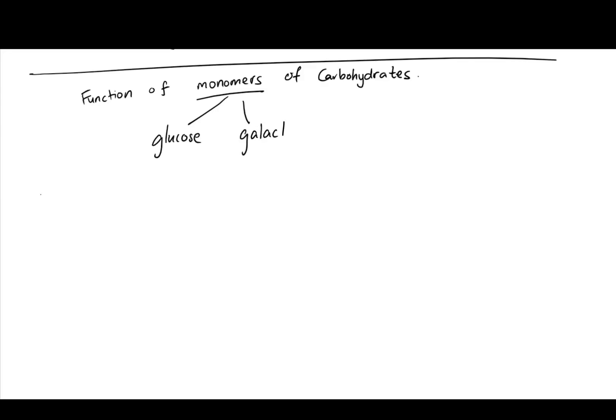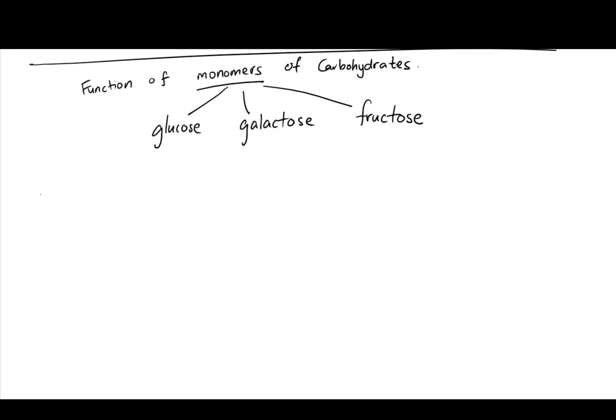We have glucose, galactose, and fructose. So as you can see, they kind of hint you where you can get these monomers from. Galactose, you can get it from milk, and fructose is really the sugar from fruit.